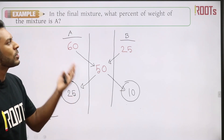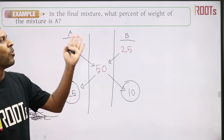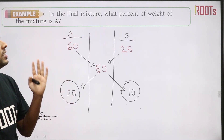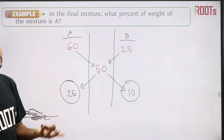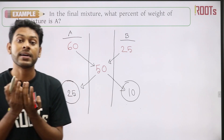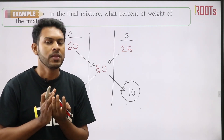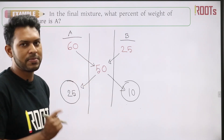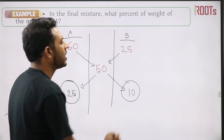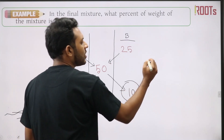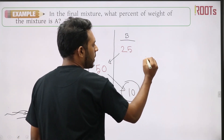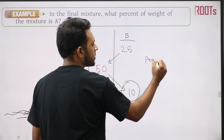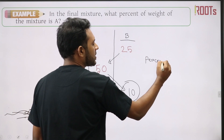So the question is: what percent of the weight of the mixture is A? What percent is the weight of the mixture? The percentage of A over the total equals the total percentage.